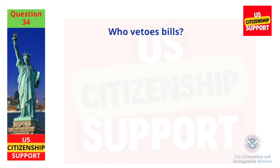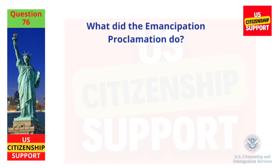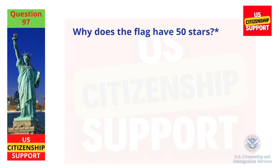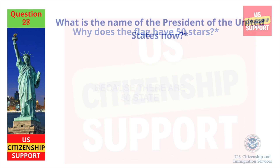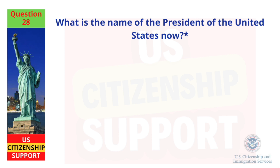Who vetoes bills? The President. What did the Emancipation Proclamation do? Freed the slaves. Why does the flag have 50 stars? Because there are 50 states. What is the name of the President of the United States now? Joe Biden.